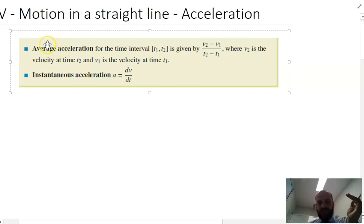Now, a couple of little formulas you might like to have. Average acceleration is given by V2 minus V1, where V2 and V1 are velocity, over T2 minus T1.